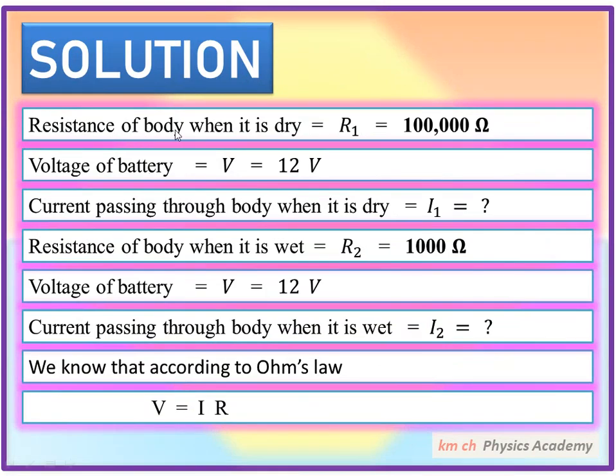Resistance of body when it is dry, R1 is 100,000 ohm. Voltage of battery is 12V. Current passing through body when it is dry...